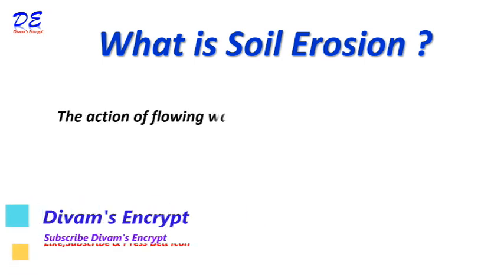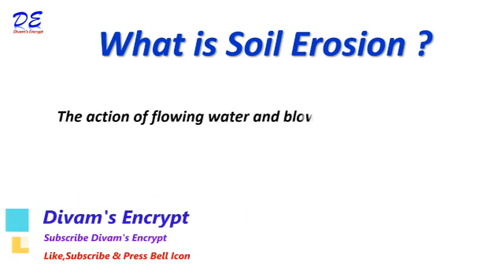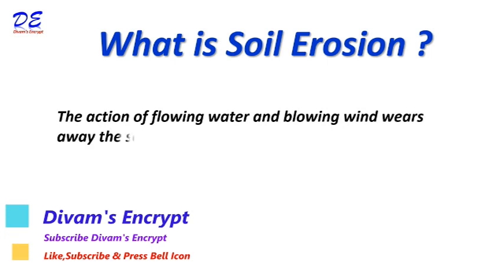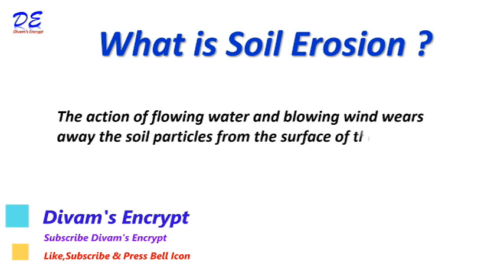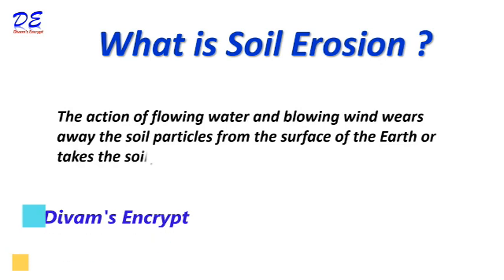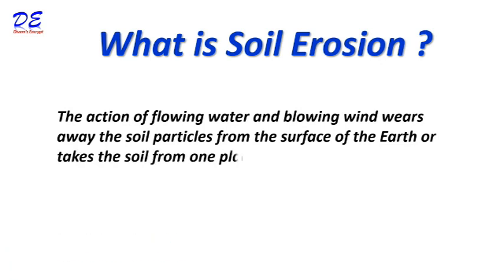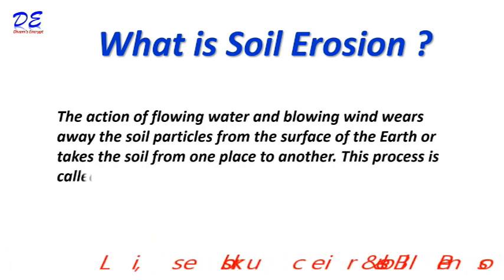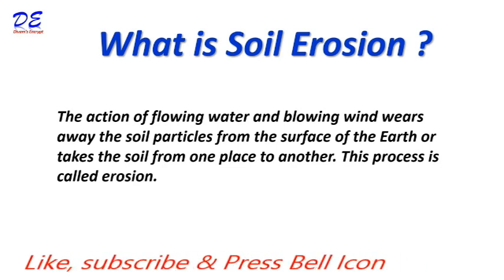Now let us see what is soil erosion. The action of flowing water and blowing wind wears away the soil particles from the surface of the earth, or takes the soil from one place to another. This process is called erosion.